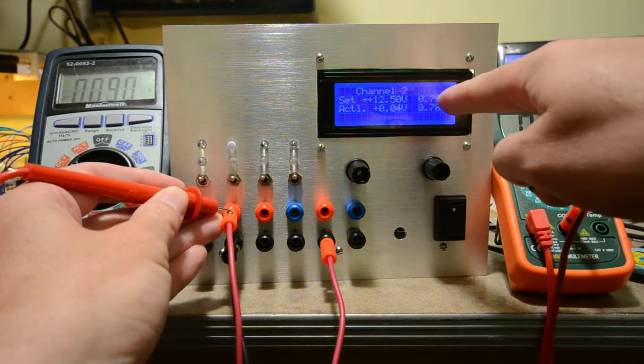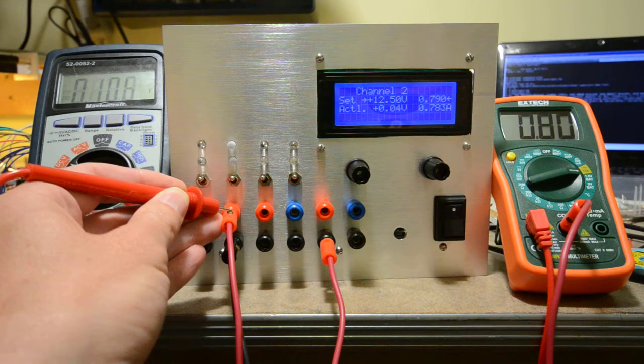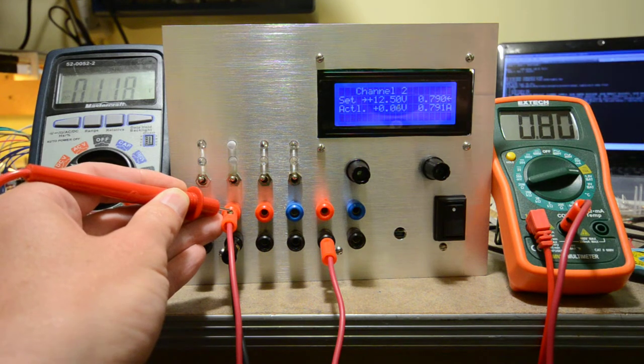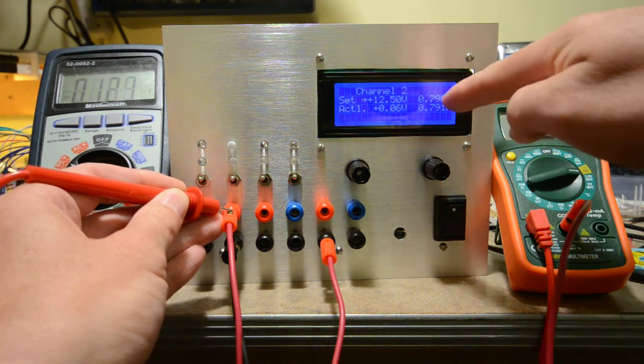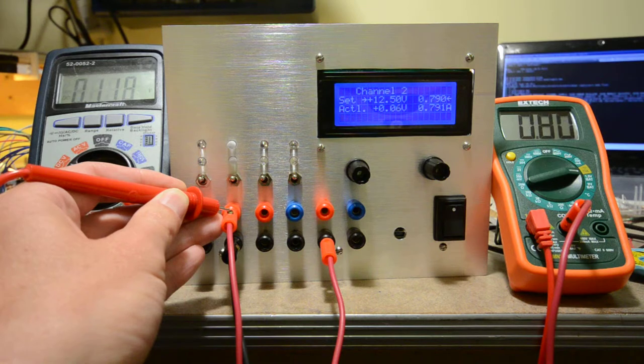The setpoint current is 0.79 amps. The actual current measured on the power supply is 0.791, give or take.